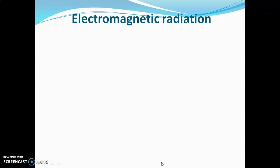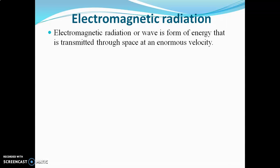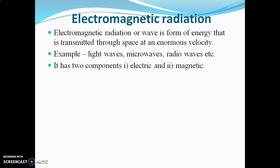Before starting with spectroscopy, one should know what electromagnetic radiation is. Electromagnetic radiation or electromagnetic wave is a form of energy that is transmitted through space at an enormous velocity. Light waves, microwaves, and radio waves are examples of electromagnetic radiation. This radiation has both an electric and a magnetic component.